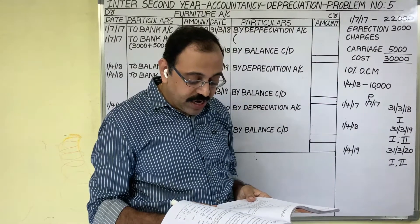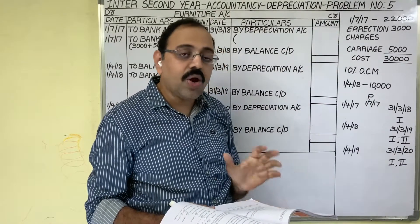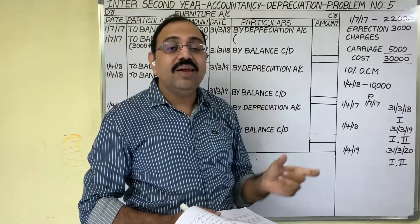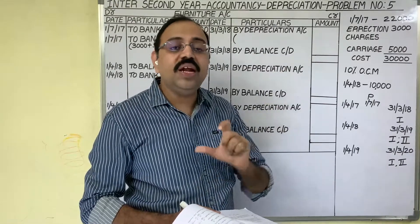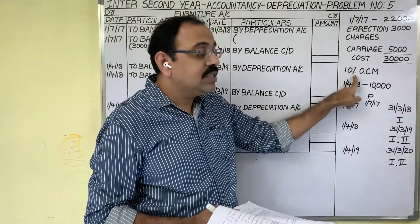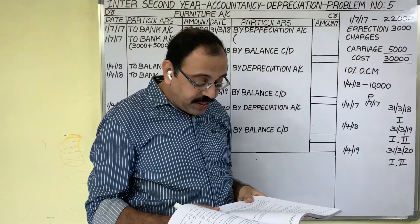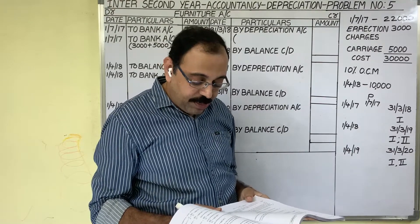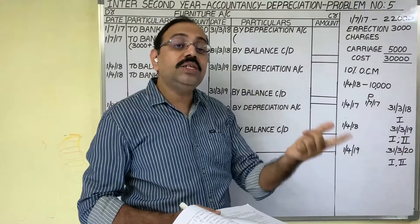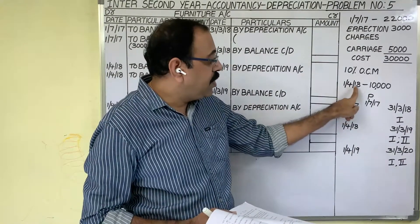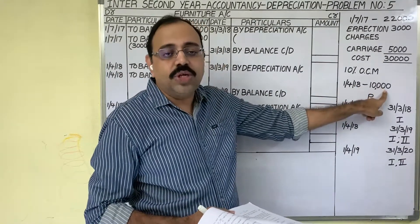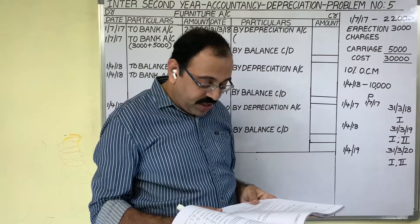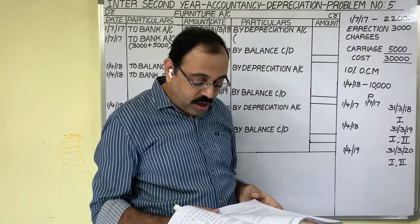Depreciation is to be charged at the rate of 10% on the original cost method every year. Under the fixed installment method — also known as the straight line method — we should provide 10% depreciation on this asset. Additions are made to the asset for 10,000 rupees on 1st April 2018; they purchased another furniture on 1st April 2018 for 10,000 rupees, so the second asset cost is 10,000.